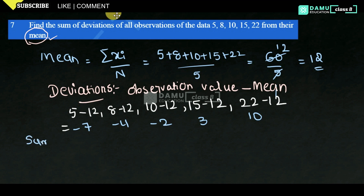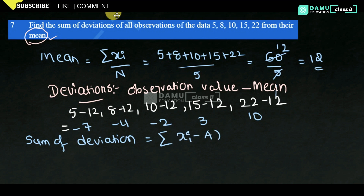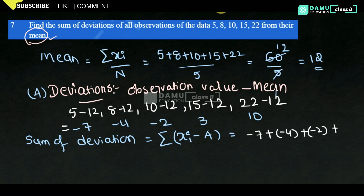The sum of deviations will be equal to summation of xi minus A, where A is the deviated value. Summing all: minus 7 plus minus 4 plus minus 2 plus 3 plus 10. Minus 7 plus minus 4 will be minus 11, minus 11 plus minus 2 will be minus 13, plus 13. So we get 0.